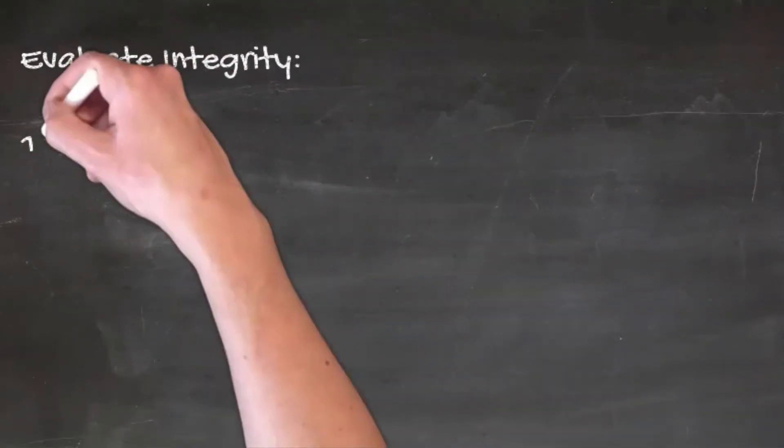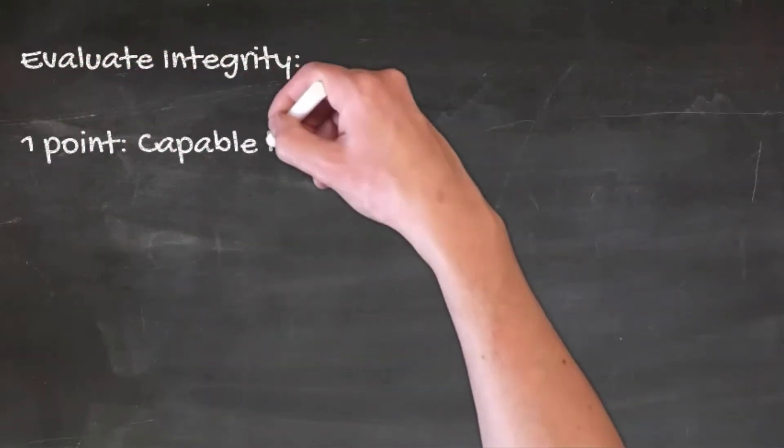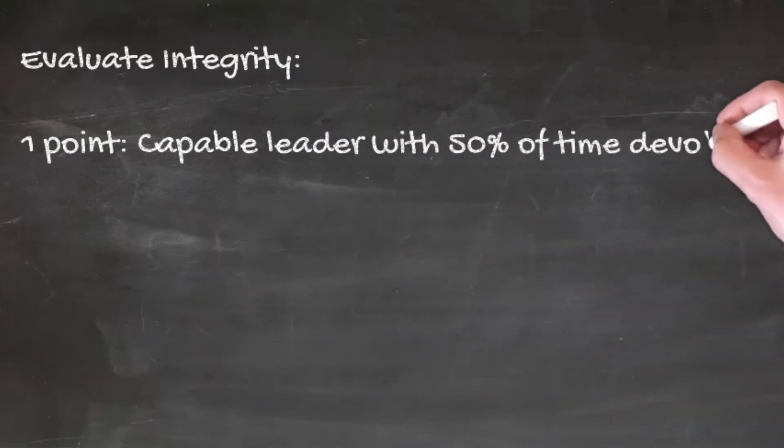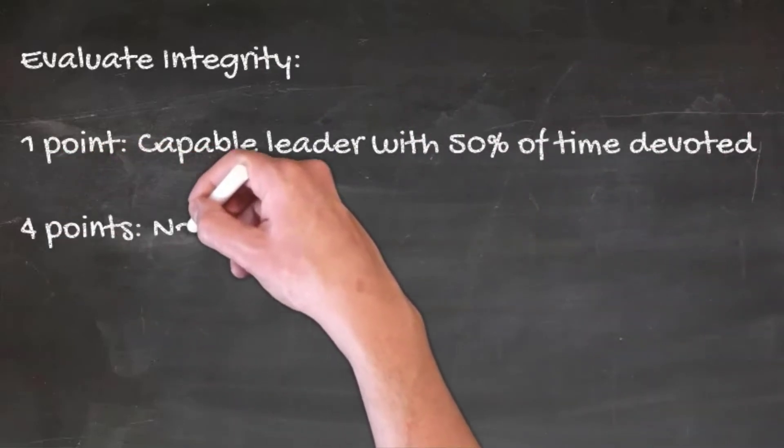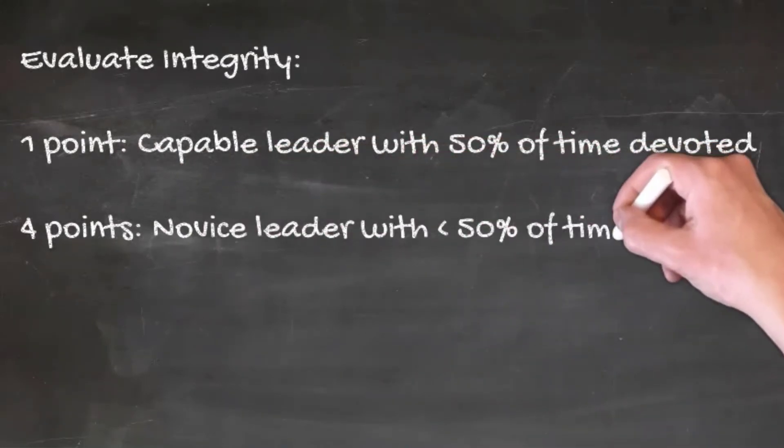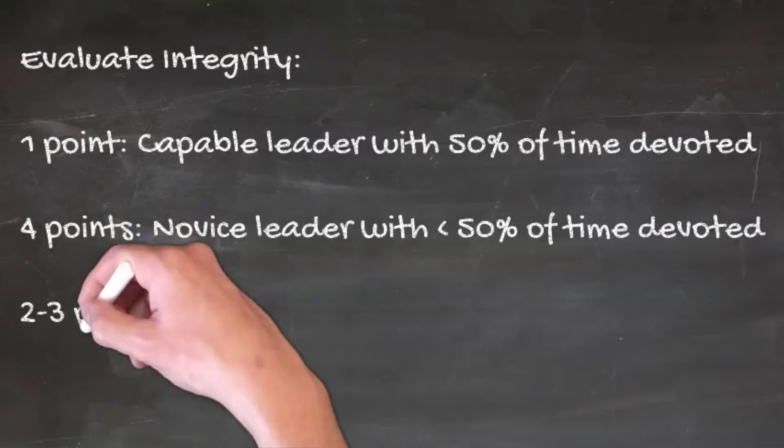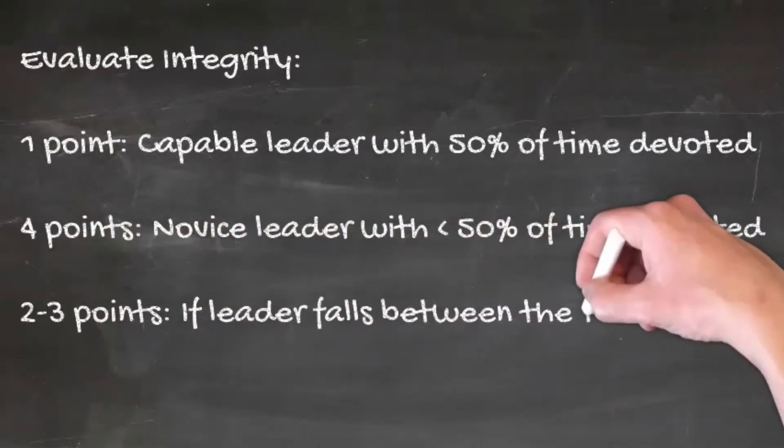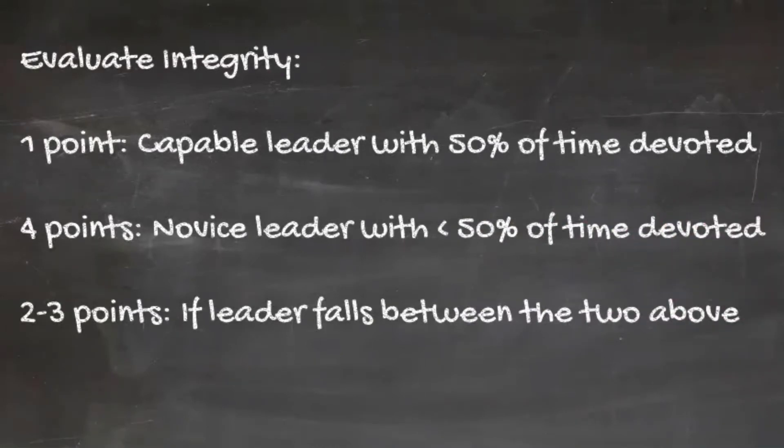In evaluating integrity, one point will be dedicated if the project has a capable leader that can motivate the team and is dedicated for more than 50% of their time. Four points will be given if the project leader is a novice or dedicates less than 50% of their time to the project. And two or three points are if you believe that the project leader is somewhere in between the two above thresholds.